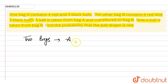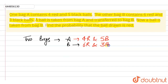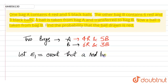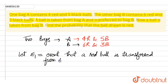So we have two bags here. Bag A contains four red balls and five black balls, and bag B contains six red balls and three black balls. Let event E1 denote the event that a red ball is transferred from bag A to bag B.